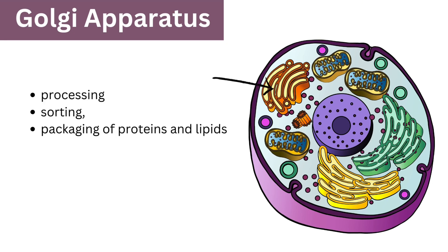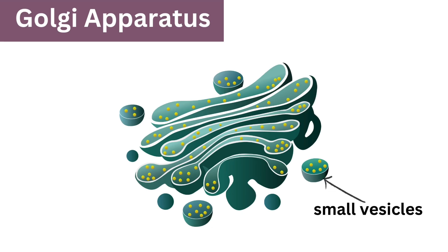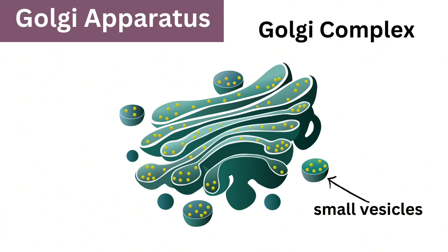The Golgi apparatus is a vital organelle involved in the processing, sorting, and packaging of proteins and lipids within the cell. The Golgi apparatus consists of a series of flattened membrane-bound sacs called cisternae. Surrounding the cisternae are small vesicles which transport molecules to and from the Golgi apparatus.